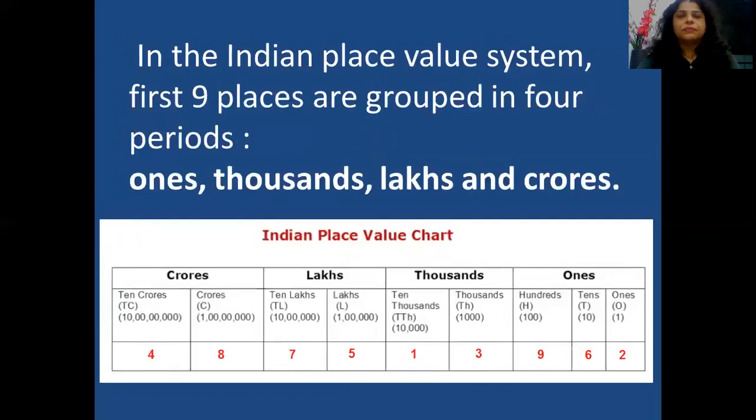In the Indian place value system, the first 9 places are grouped into 4 periods.